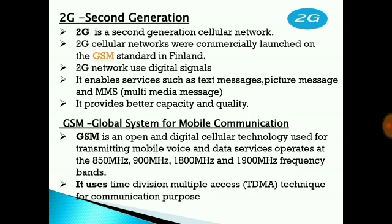It also provides better capacity and quality. What is meant by GSM? GSM is an abbreviation of Global System for Mobile Communication. GSM is an open and digital cellular technology used for transmitting mobile voice and data services. It operates at 850 MHz, 900 MHz, 1800 MHz, and 1900 MHz frequency bands, and uses Time Division Multiple Access (TDMA) technique for communication.